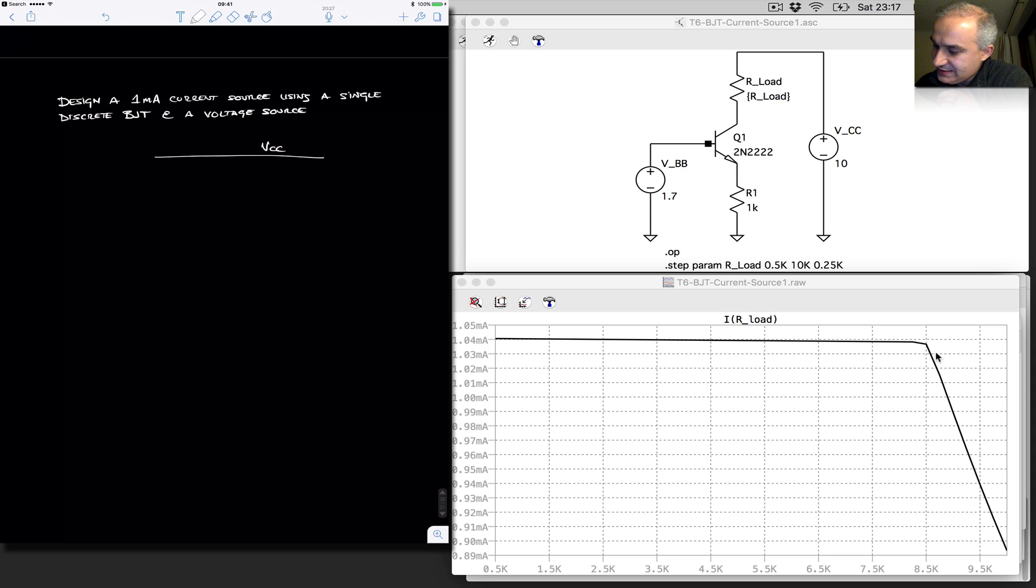So we have here our VCC, and this is where we are going to place our load, connected to the collector. We have our emitter resistor to ground. Before we wanted to have the voltage here set to whatever we want, around 1.7 volts, if we wanted an emitter voltage at 1 volt.